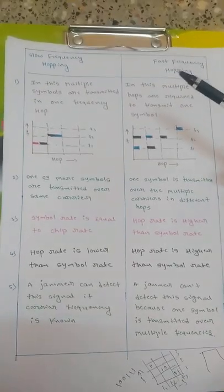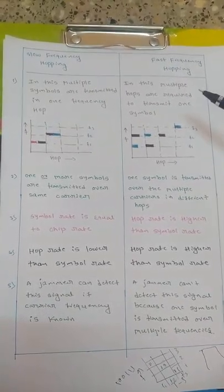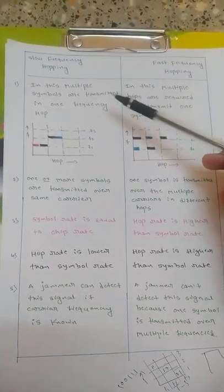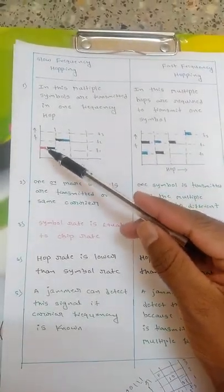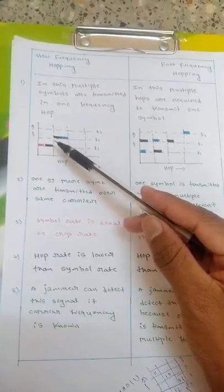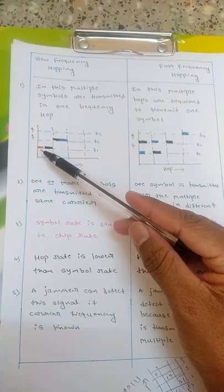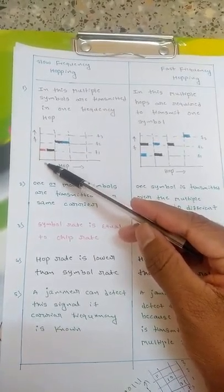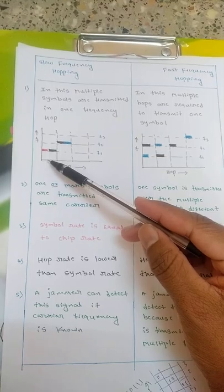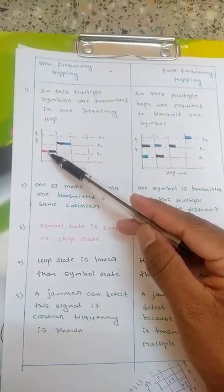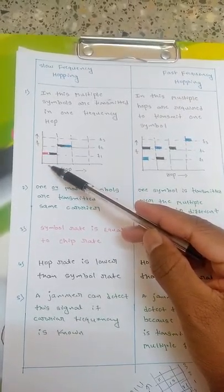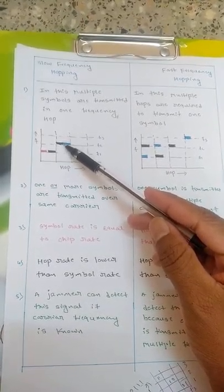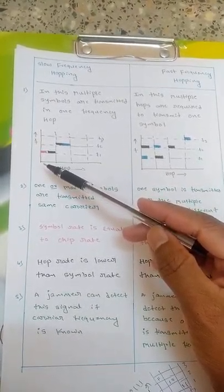In this video our intention is to differentiate slow frequency hopping and fast frequency hopping. In slow frequency hopping, multiple symbols are transmitted in one frequency hop. Suppose this is our first data, this is the second, and this is the third — color differentiates them. In one time period we are sending multiple data: the red color data and the black color data are sent in the same time period. The data rate is greater than the symbol rate.